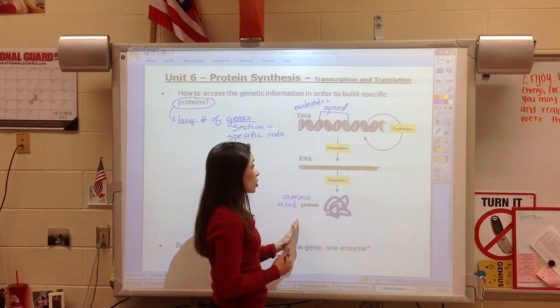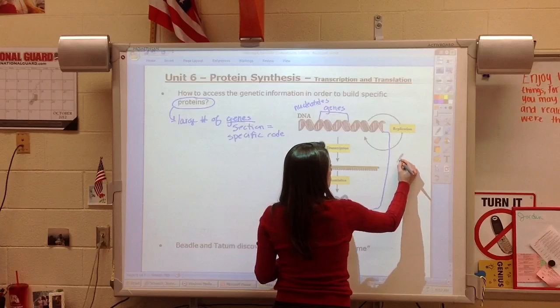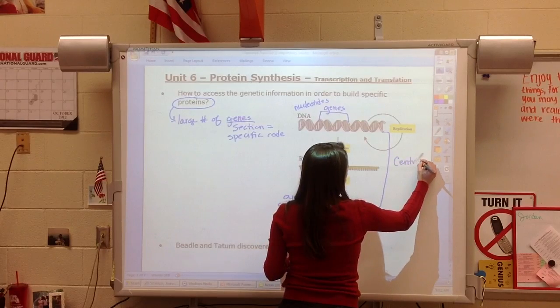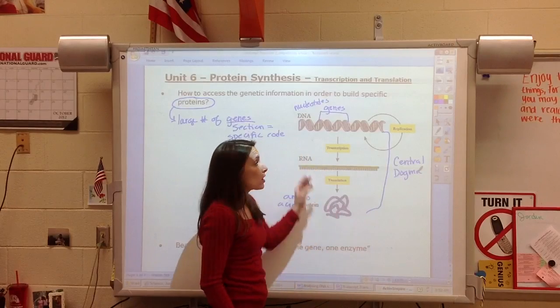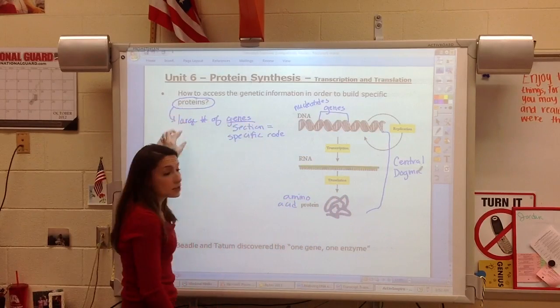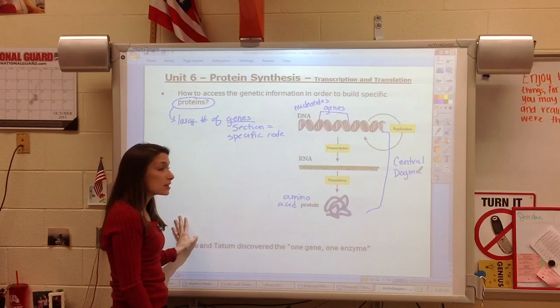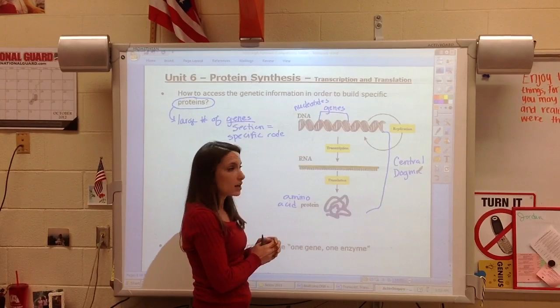This diagram is showing us what's called the central dogma. So these steps are known as the central dogma, which really just means the main idea of biology. But we do need to keep in mind that in order for every cell to be able to make the proteins it needs, we are going to need the entire genetic code in each cell.